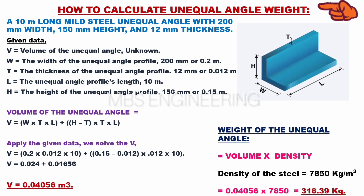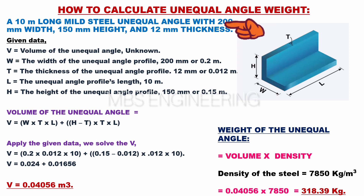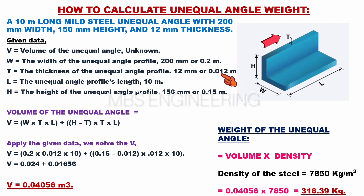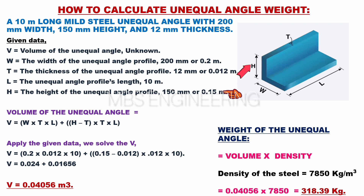Next, we learn about how to calculate the weight of mild steel unequal angle materials. For example, a 10-meter long mild steel unequal angle with 200 millimeters width, 150 millimeters height, and 12 millimeters thickness. Given data: V equals volume of the unequal angle — unknown. W equals 200 millimeters or 0.2 meters. T equals 12 millimeters or 0.012 meters. L equals 10 meters. H equals 150 millimeters or 0.15 meters.